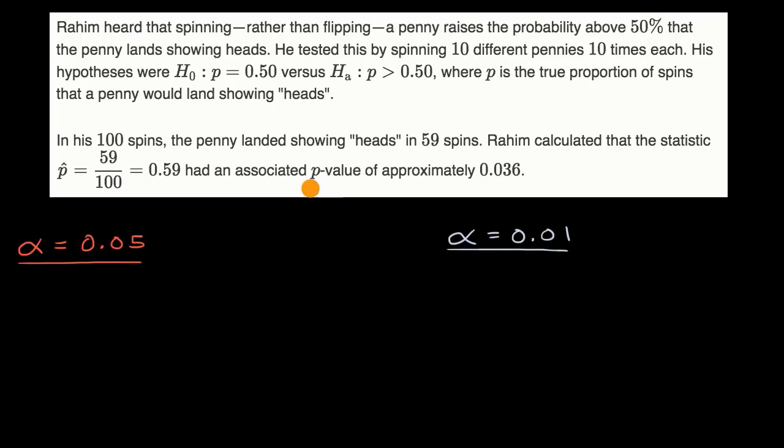So let's first of all remind ourselves what a p-value even is. You could view it as the probability of getting a sample proportion at least this large if you assume that the null hypothesis is true. And if that is low enough, if it's below some threshold, which is our significance level, then we will reject the null hypothesis.